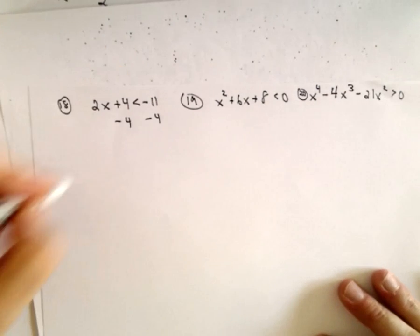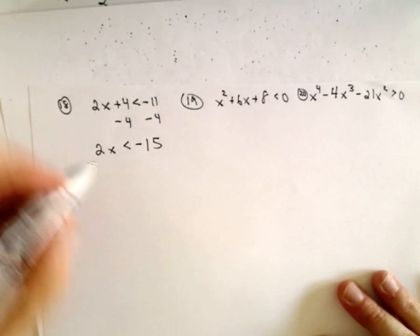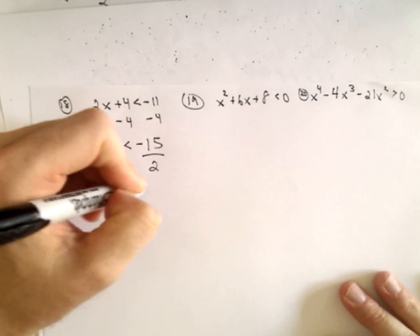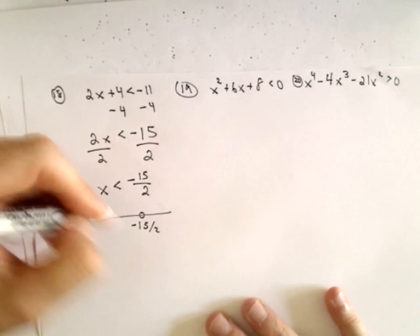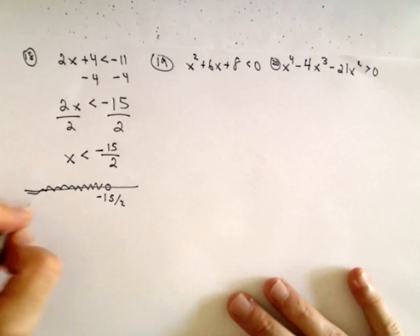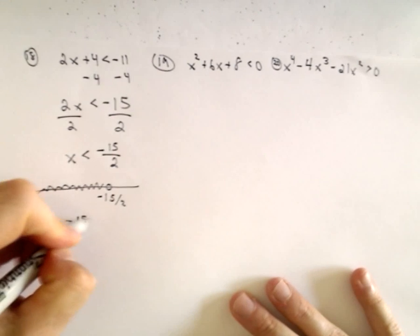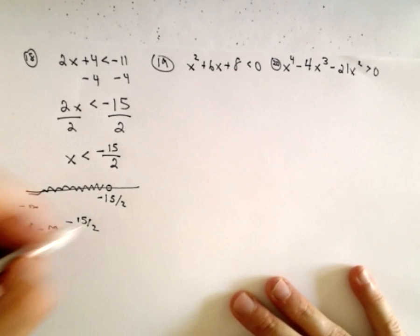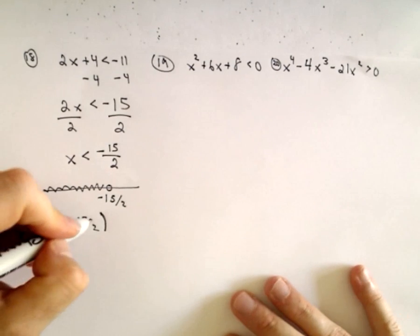So what I'm going to do is subtract 4 from both sides. We'll have 2x is less than negative 15. Just divide both sides by 2, and we'll have x is less than negative 15 over 2. In terms of a number line, we're using everything less than that. In interval notation, the solution set is from negative infinity up to negative 15 over 2. You always use parentheses on infinity, and since negative 15 over 2 is not included, we put parentheses there as well.